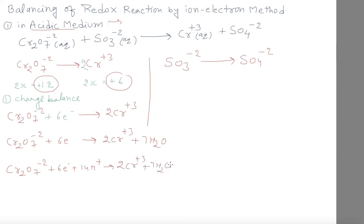Now you can check that each and every element with charge is balanced. Chromium: 2 on each side. Oxygen: 7 on this side, and 7 in the 7 water molecules on the other side. Hydrogen: 14 on each side. Charge: minus 2 and minus 6 gives minus 8 on the left; plus 6 minus 14 gives minus 8 on the right. So in this way this half reaction is balanced.